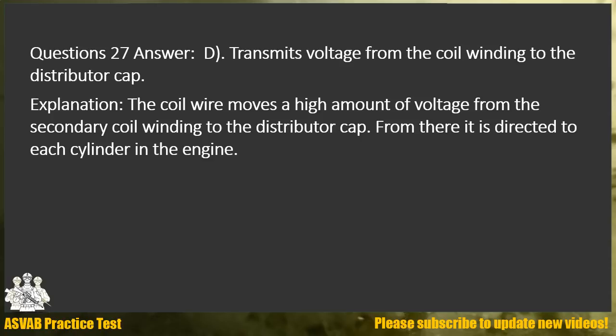Answer D. Explanation: The coil wire moves a high amount of voltage from the secondary coil winding to the distributor cap. From there it is directed to each cylinder in the engine.